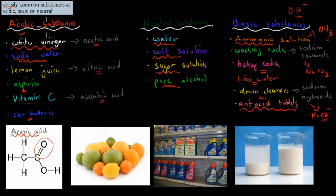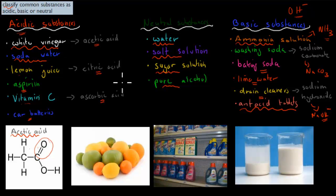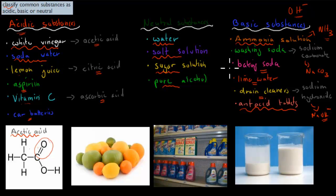So for this dot point, you should know what a base and an acid is — their features, such as sour taste, bitter taste, and so on — and you should know some of these common substances and whether they're classified as acidic, basic, or neutral. Hopefully that was useful.